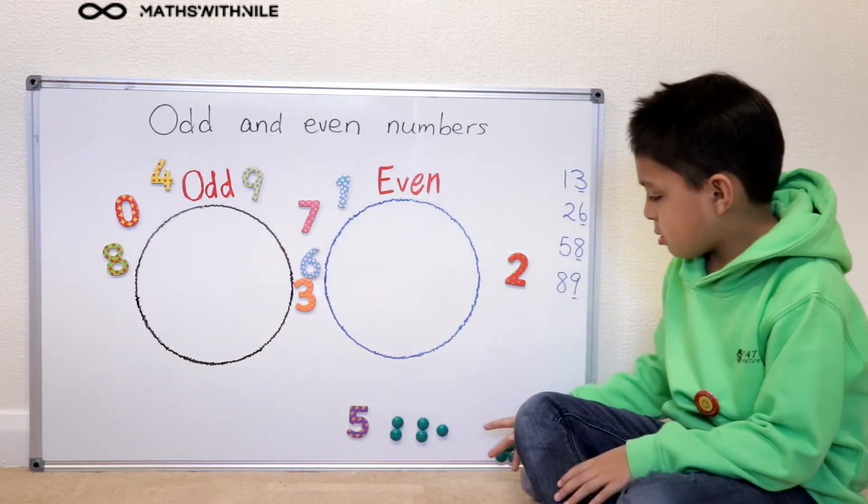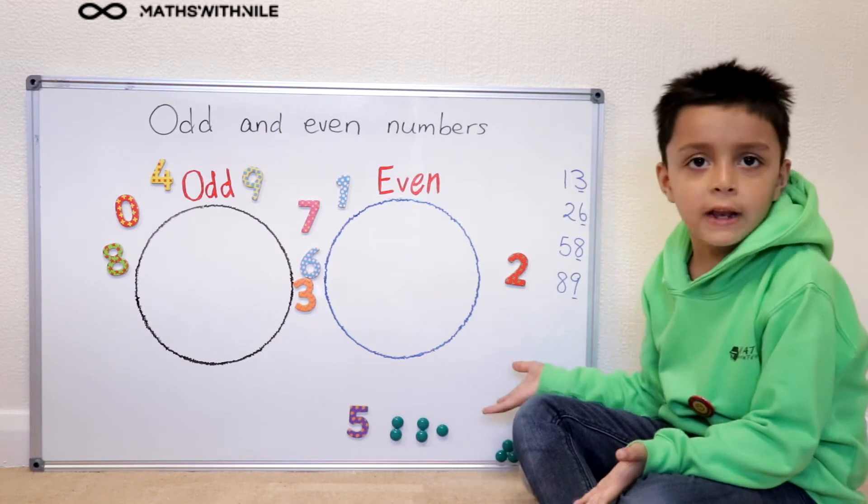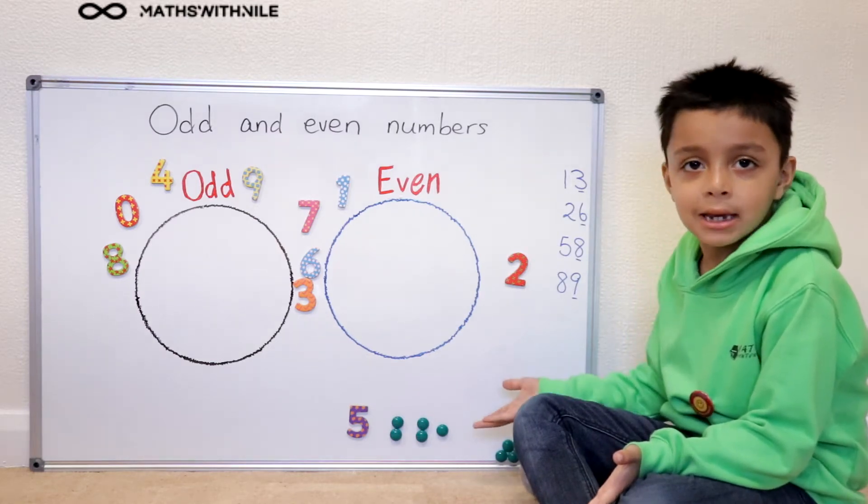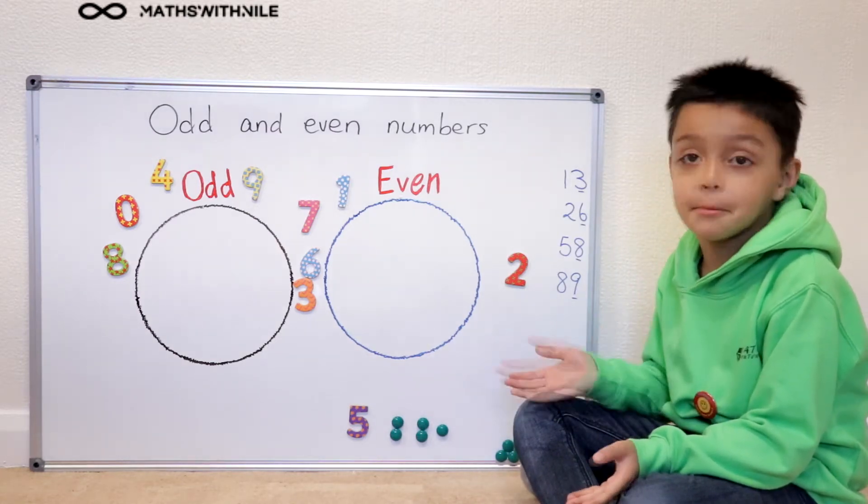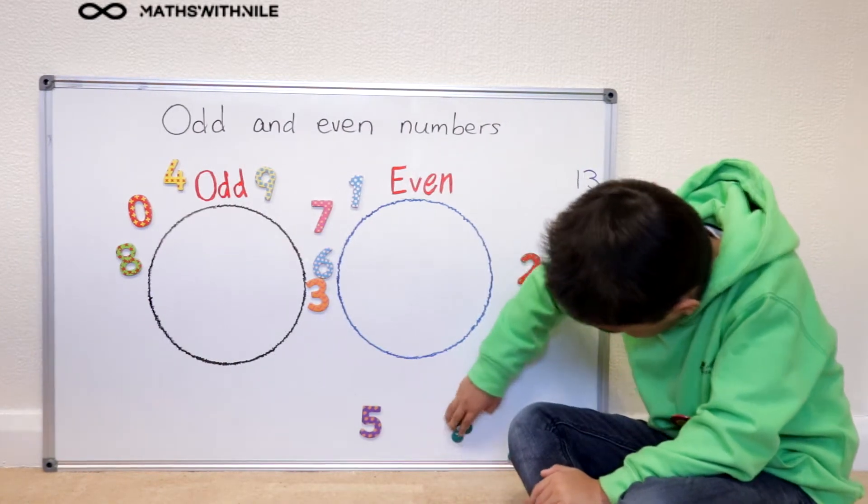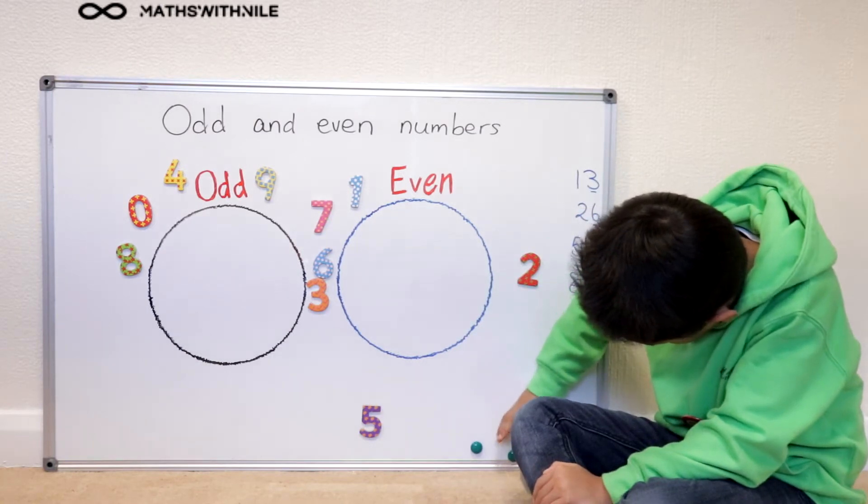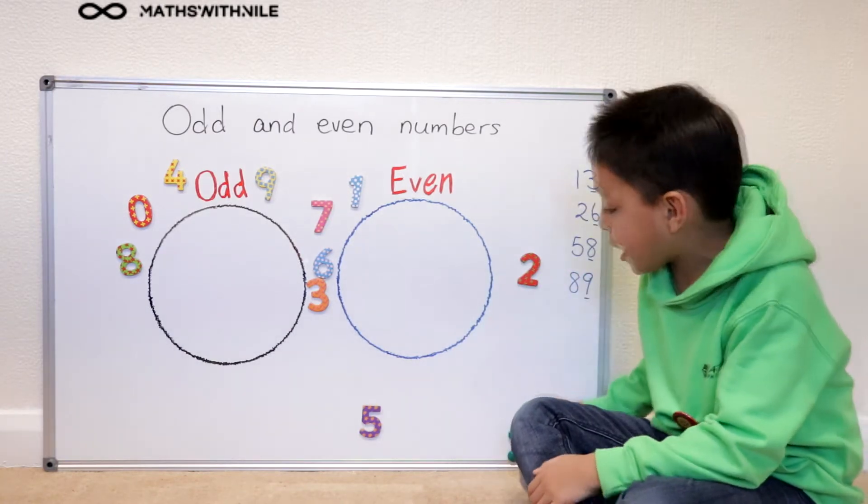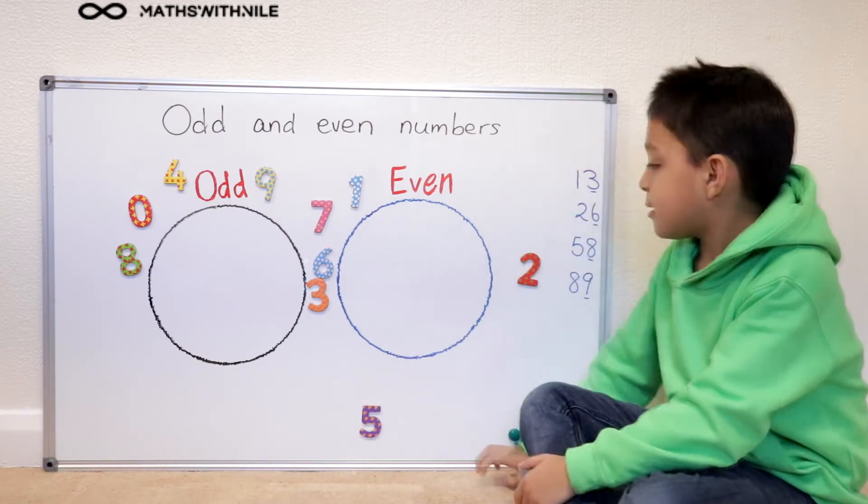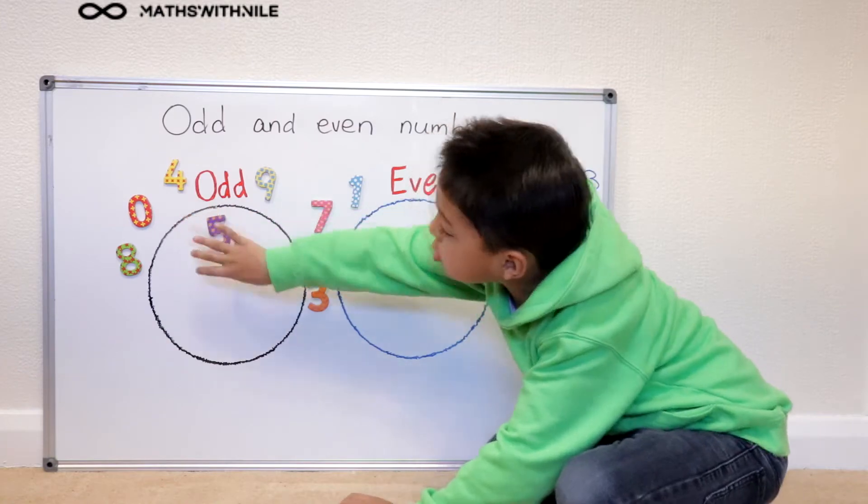But we got two lots of twos, that's good, but we got one left out. So that means it's an odd number. So I'll put these first, and then this goes in the odd circle.